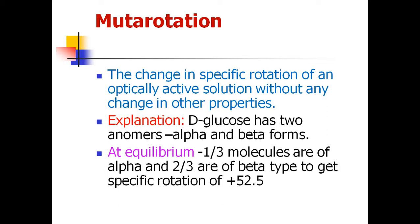When you prepare D-glucose in water, making a D-glucose solution, after some time an equilibrium state is attained. At the equilibrium state, about one-third of the molecules are alpha-D-glucose type, and about two-thirds are beta-D-glucose. The optical rotation at equilibrium for this D-glucose solution is around plus 52.5 degrees.